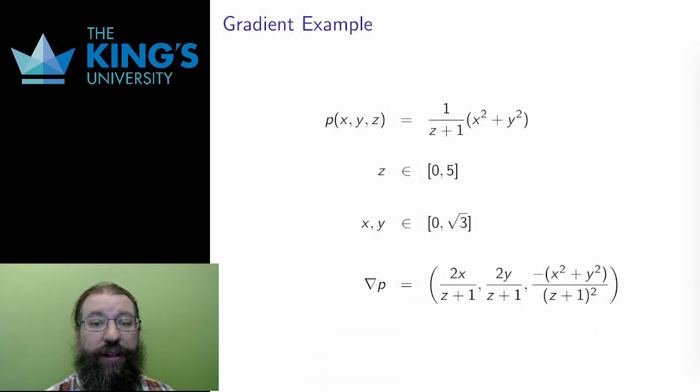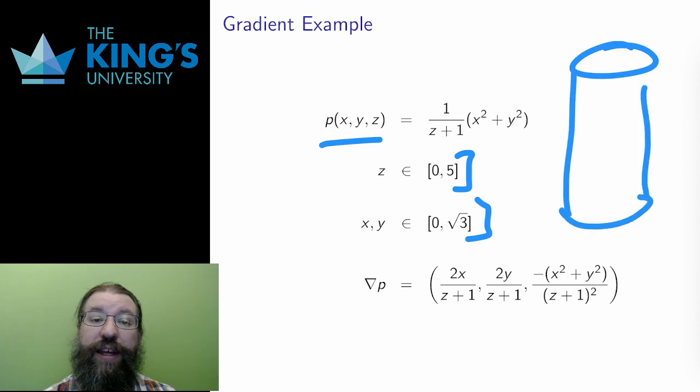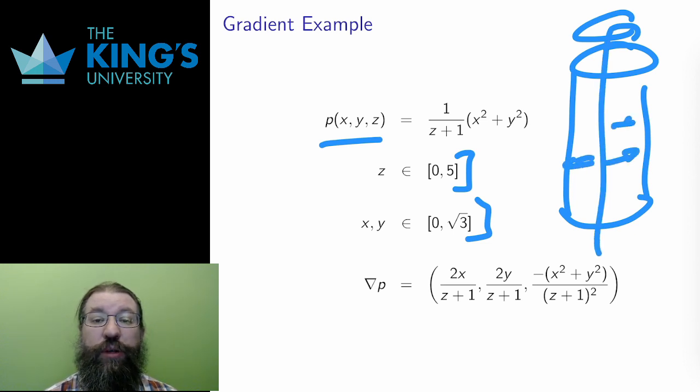Here is an example calculation. This is a scalar field in three dimensions with a domain of x and y in the interval from 0 to root 3, and z between 0 and 5. This scalar field is intended to measure the pressure in a rotating cylindrical drum oriented along the x-axis. The pressure here increases towards the edge of the drum, but decreases as the height in the drum increases, as you see with this z in the denominator.